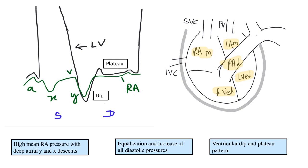Now let's see what happens to the atrial and ventricular pressure tracings during diastole. This illustration shows a green waveform representing the right atrial pressure tracing and a black waveform representing the left ventricular pressure tracing. These can be interchanged with the corresponding ventricle. I have overlapped them so they correspond to each other's systole and diastolic phases. The waveforms in the right atrial pressure tracing are: A, X, V, and Y.